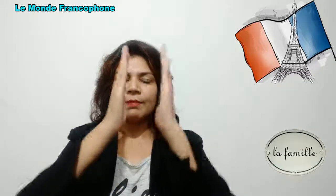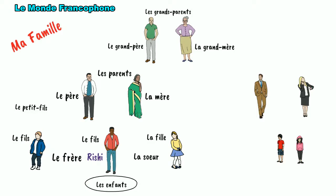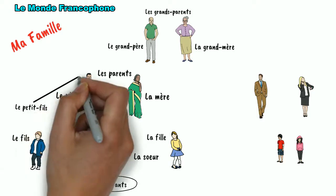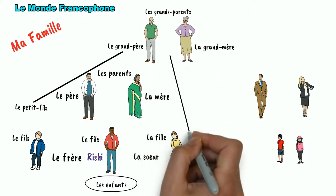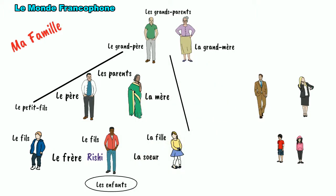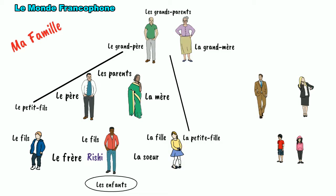In this family tree, grandparents, parents and children — these children are grandchildren for the grandparents. So grandson in French is le petit-père. Rishi's granddaughter is la petite-fille. And grandchildren in French is called les petits-enfants.